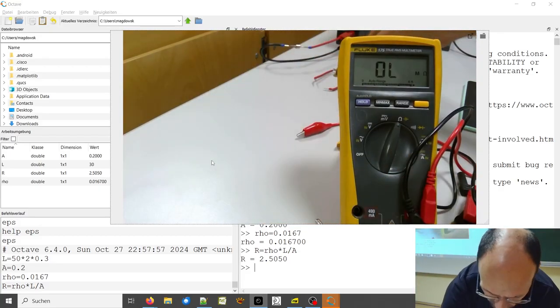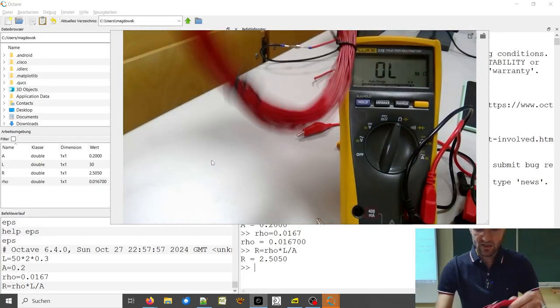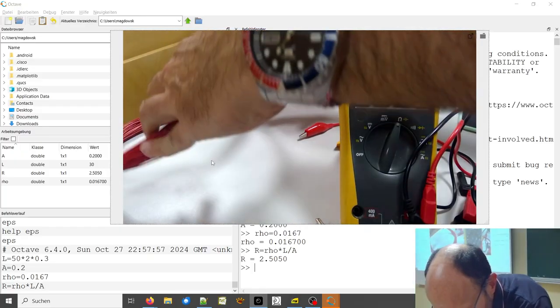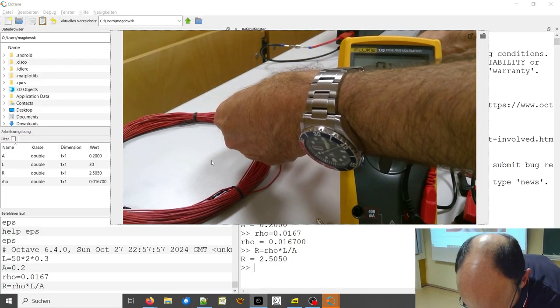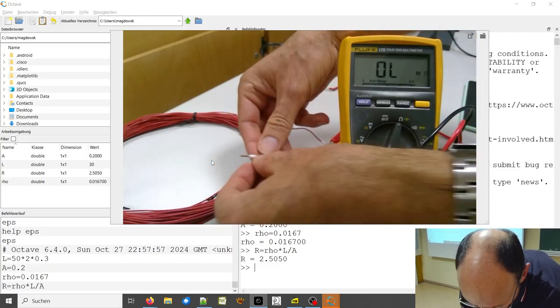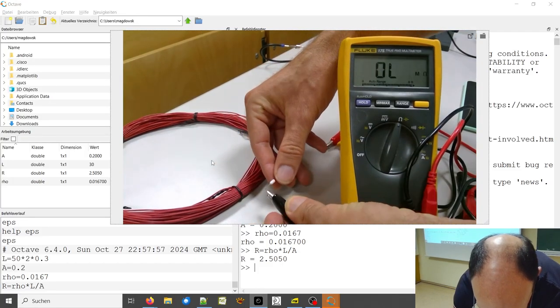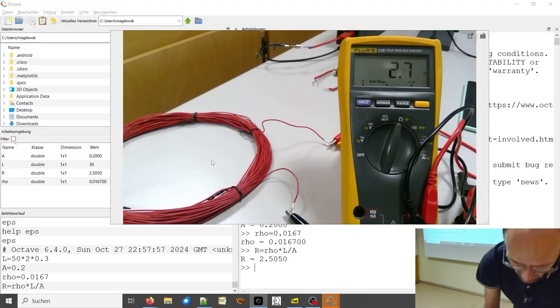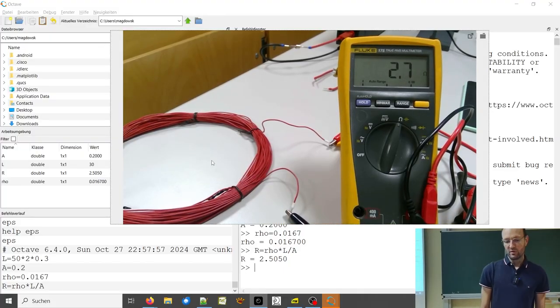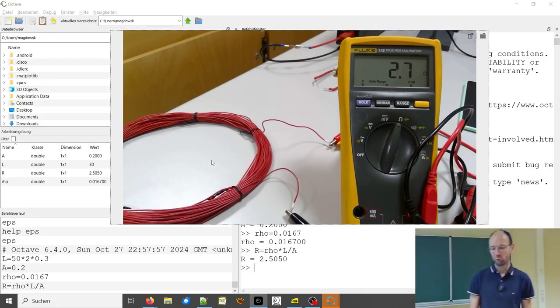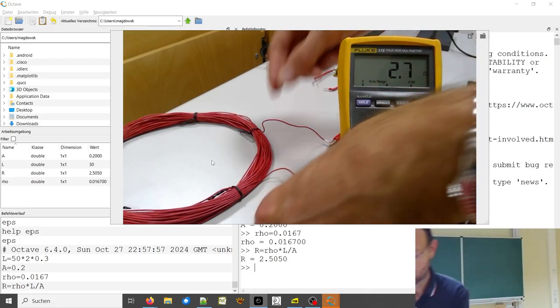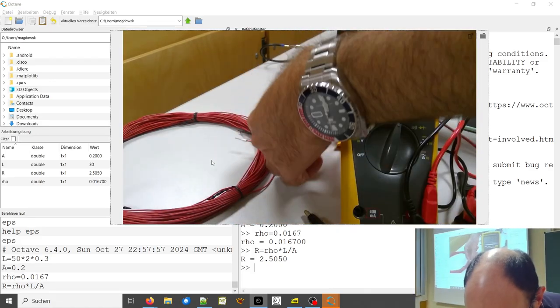So then let's take this cable here. As I said, what we calculated was 2.5. So if I connect it here and if I connect it over there, well, we do not get 2.5 but 2.7. This also somehow nicely makes sense in this case. So nicely fits to what we calculated.